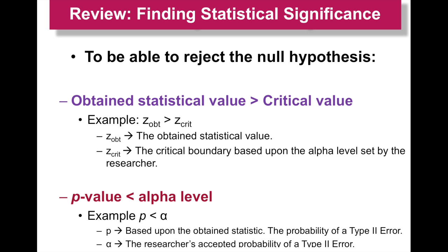Same premise for the p-value: the p-value needs to be less than the alpha. The researcher is setting the alpha level, so if alpha is set at 0.05, then that p-value needs to be less than 0.05. P is the probability of the obtained statistic, or the probability of committing a type 2 error — saying that nothing happened when it really did. Alpha is the researcher's acceptable probability of committing that type 2 error.